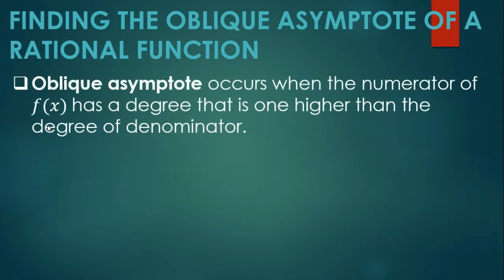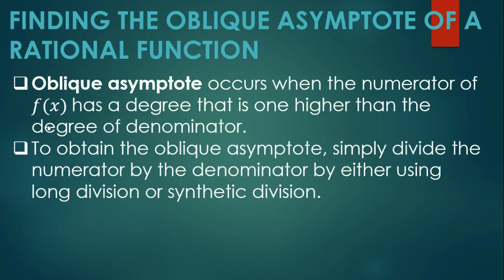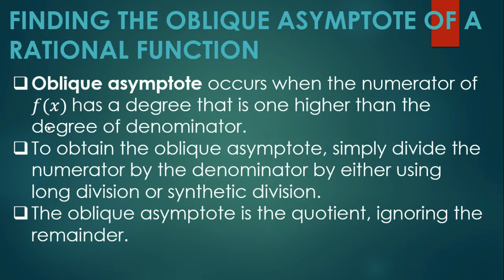Oblique asymptote occurs when the numerator of f(x) has a degree that is one higher than the degree of the denominator. Mayroon daw oblique asymptote ang isang function kapag yung degree ni numerator ay mas mataas ng isa kesa kay denominator. Like for example, kung ang degree ni numerator ay 2 at ang degree ni denominator ay 1, mayroon siyang oblique asymptote. To obtain the oblique asymptote, simply divide the numerator by the denominator using long division or synthetic division. The oblique asymptote is the quotient, ignoring the remainder. Kapag nakuha mo yung quotient, yun yung oblique asymptote agad — huwag mo nang pansinin yung remainder.